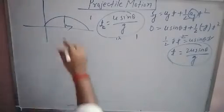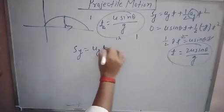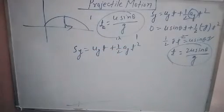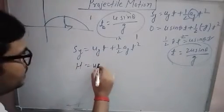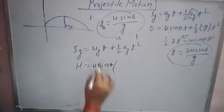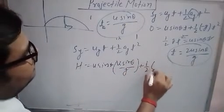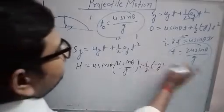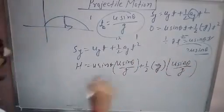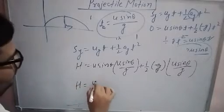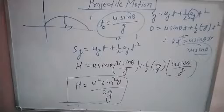To find the maximum height, we write the equation along the y-axis: s_y = u_y·t + ½·a_y·t². Here s_y is the maximum height we want to find, u_y is u sin theta, and we substitute the time of ascent, t = u sin theta / g. We also include the term ½·(−g)·t², substituting t = u sin theta / g. Solving this gives the maximum height: H = u² sin²theta / 2g.